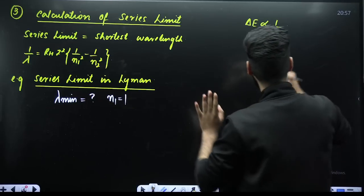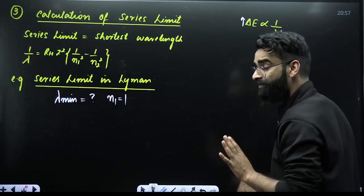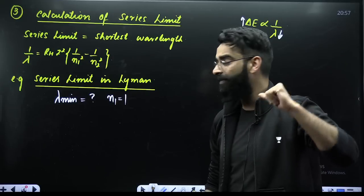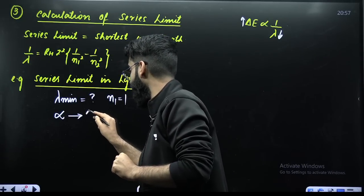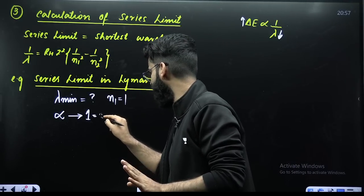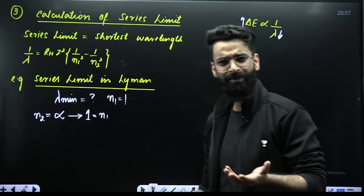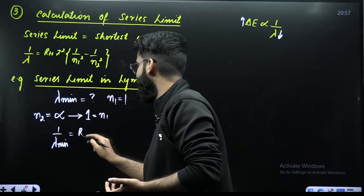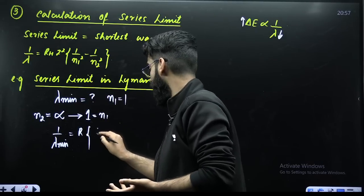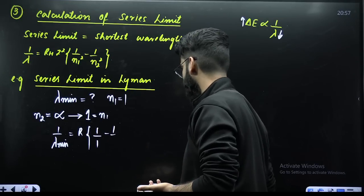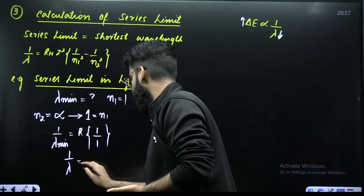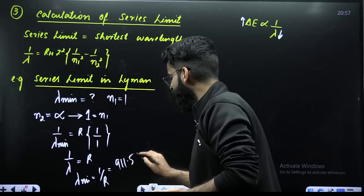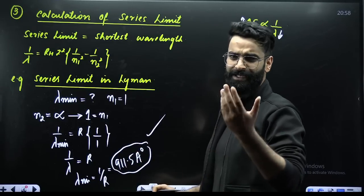What do we have to calculate? Shortest wavelength. For the wavelength to be shortest, the energy gap has to be maximum. In case of Lyman series, maximum energy gap is when the electron makes a transition from infinity to one. This is your lower energy state and this is your higher energy state. Using Rydberg's formula: 1/λ_min = R · Z² · (1/N₁² − 1/N₂²). For hydrogen Z = 1. Since 1/∞ = 0, this simplifies to 1/λ_min = R, or λ_min = 1/R. The value of 1/R is directly 911.5 angstroms. So this is the shortest wavelength in case of the Lyman series.